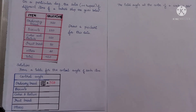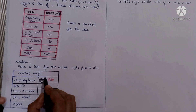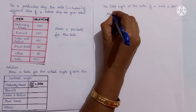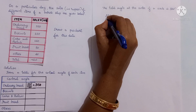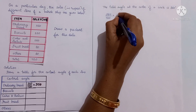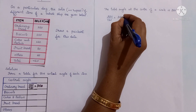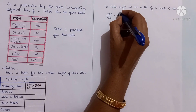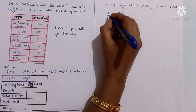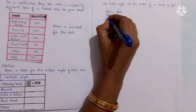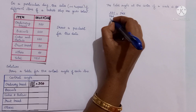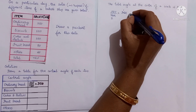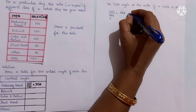For ordinary bread, sales are 320 rupees, so we calculate 320 divided by 720 into 360 degrees. We can cancel: 360 divided by 36 is 10, and 720 divided by 36 is 20, then 320 divided by 2 equals 160 degrees. So the sector angle for ordinary bread is 160 degrees.